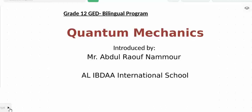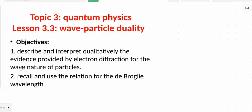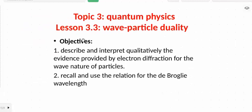Asalaam alaykum dear students. We continue our work with quantum mechanics, starting with a new lesson — lesson 3.3, Wave Particle Duality. In this part, we will cover two main objectives. Number one: describe and interpret qualitatively the evidence provided by electron diffraction for the wave nature of the particle, studying De Broglie's experiment. And second: to recall and use the relation of De Broglie wavelength, concentrating on calculations.